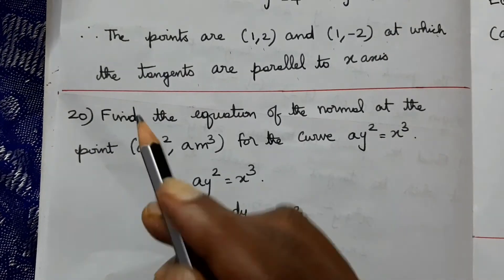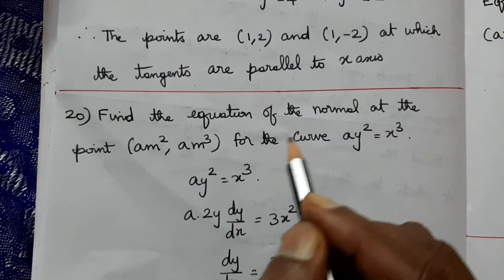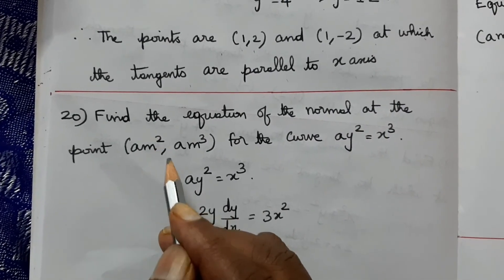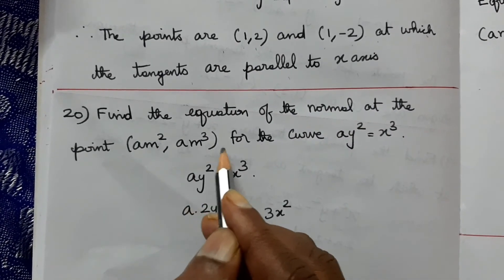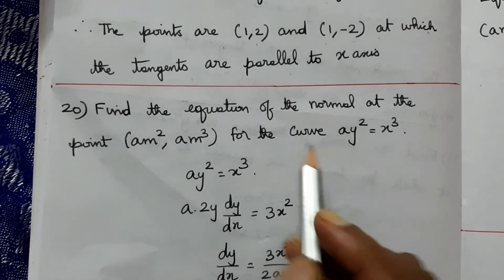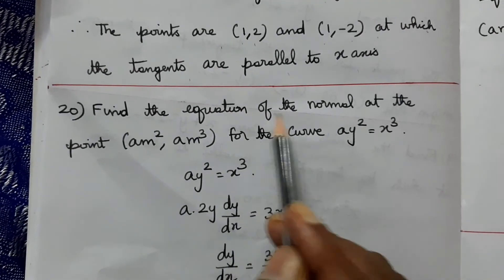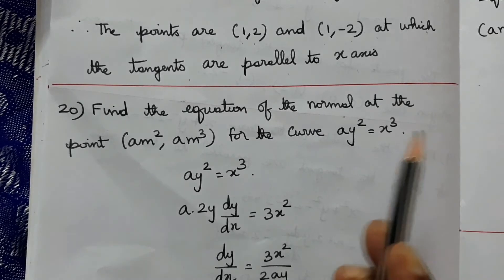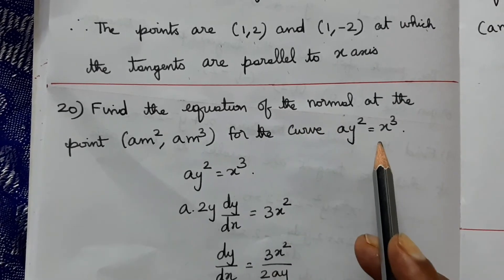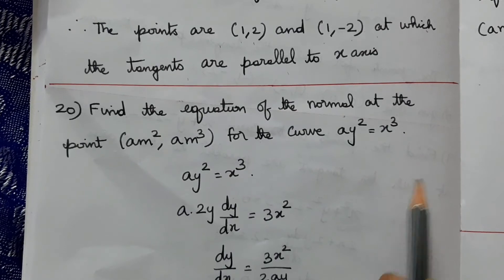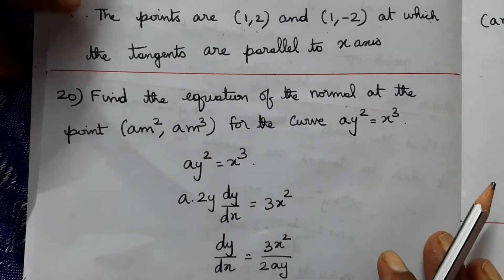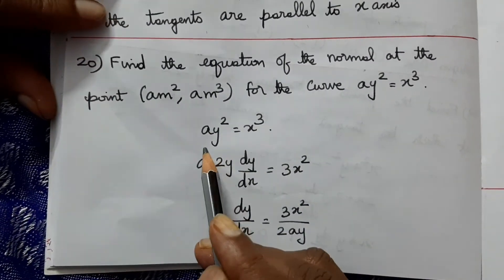Problem 28: Find the equation of the normal at the point (am², am³) for the curve ay² = x³. We need to find the slope of the tangent first, then use the relationship that slope of normal = -1/slope of tangent.